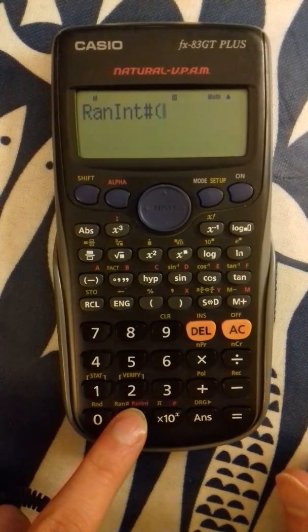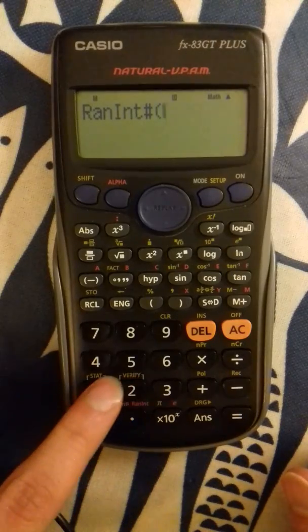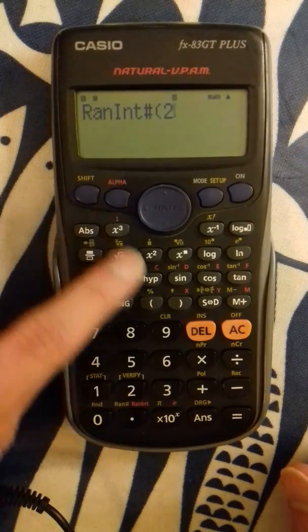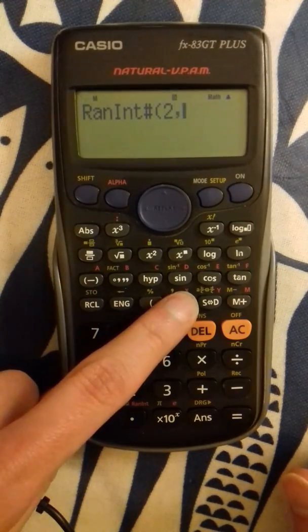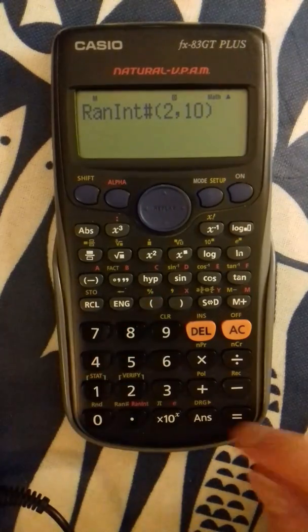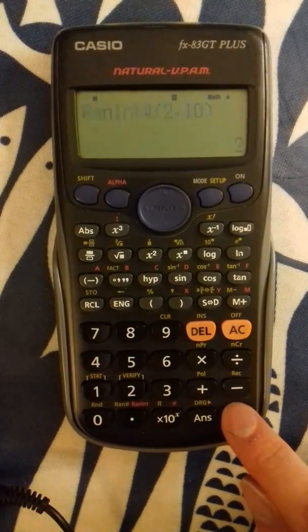And then I type two numbers I want to be the upper and lower limits. So we'll have 2 as the lower limit, and then shift, comma, 10, close the brackets, and now if I keep pressing equals you'll see that it keeps coming up with random numbers between those two limits.